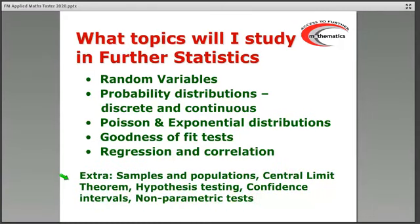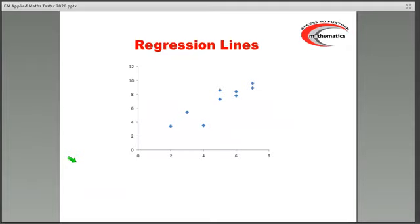The extra topics at the bottom are the ones that you would also do if you choose the further statistics option, Unit 5, if you were to do the full A-level in further maths. What we're going to do now, we're not going to try and go through every single topic. We're going to look at one topic that you already know a little bit about, which is correlation.